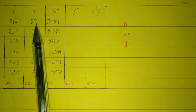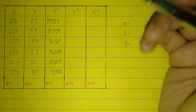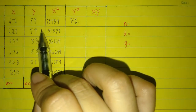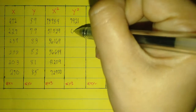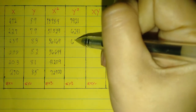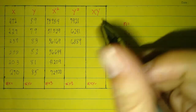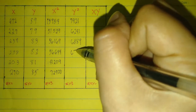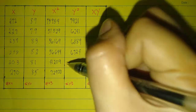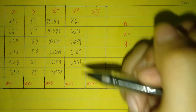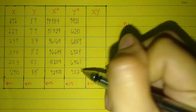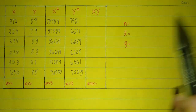To get y squared, multiply y by itself. The results are: 7,921; 6,241; 6,889; 6,724; 6,561; and 7,225.